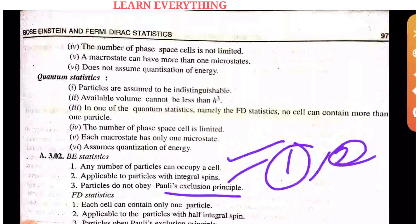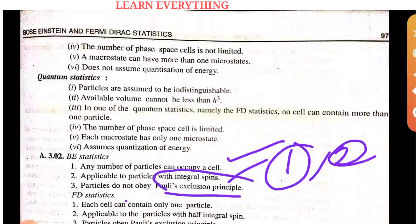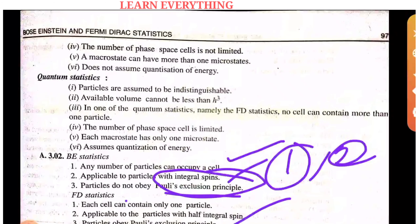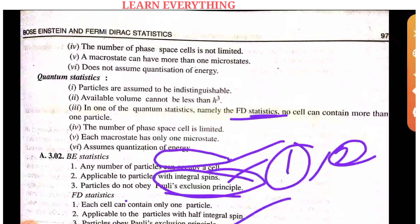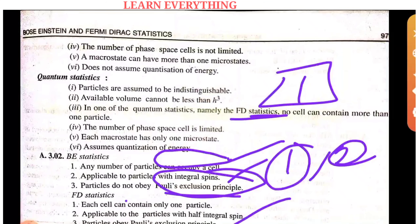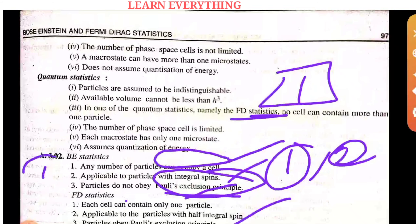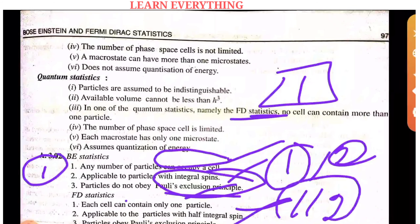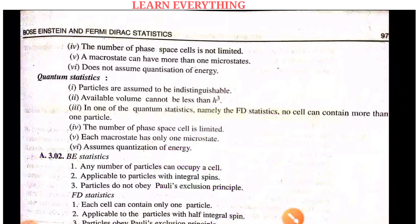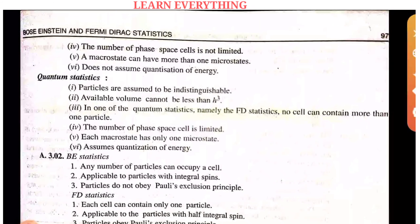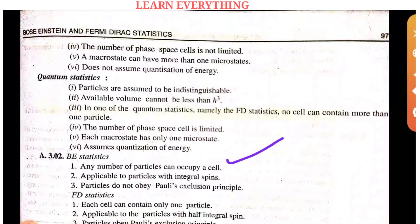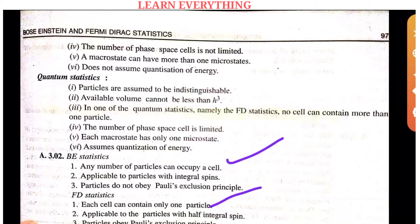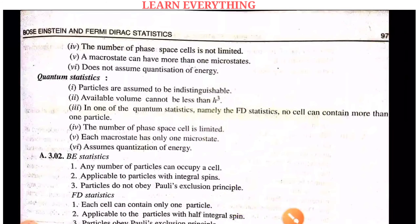Now, for Fermi-Dirac (FD) statistics, we apply the Pauli exclusion principle. In FD statistics, each cell contains only one particle. This applies to particles with half-integral spin. So: BE allows any number per cell; FD allows only one particle per cell — this is the Pauli exclusion principle.